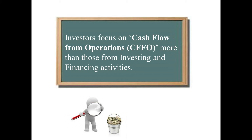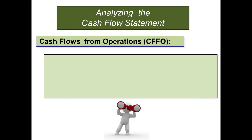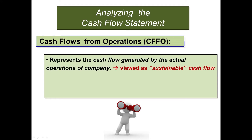Investors focus on cash flows from operations more than those from investing and financing activities. Cash flows from operations are seen as more sustainable and more repeatable. Cash flows from operations - abbreviated CFFO - has the most focus from investors. This represents cash flow generated by the actual operations of the company, viewed as sustainable cash flow that can be repeated in future periods. It is the most favored cash flow metric by investors.